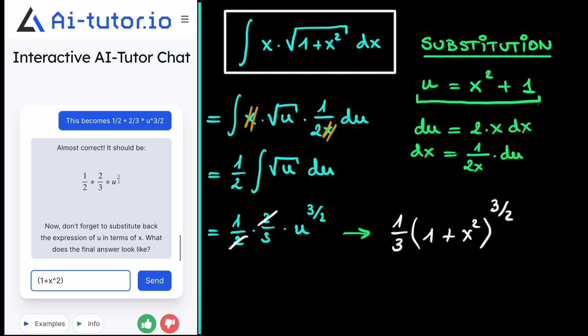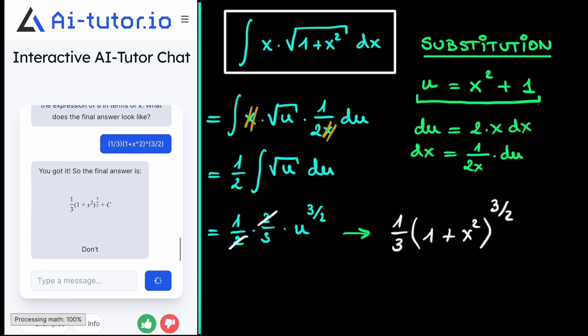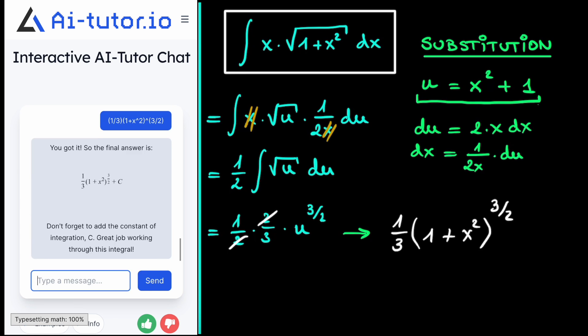And if we check this result with our AI tutor, and this time put the brackets correctly, then we see that indeed this is the right result. However, it does remark that because we're doing indefinite integration, we still need to add this constant c, which is always present for indefinite integration.